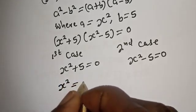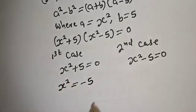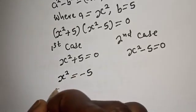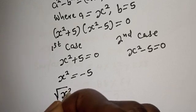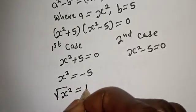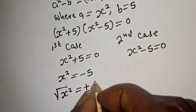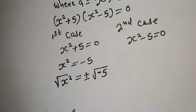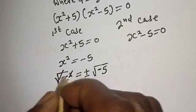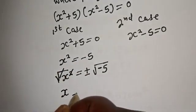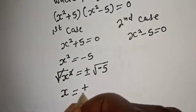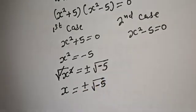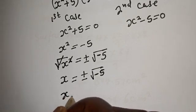s squared is equal to minus 5. Let's take the square root of both sides. Square root of s squared is equal to plus or minus square root of minus 5. This simplifies so s is equal to plus or minus square root of minus 5.